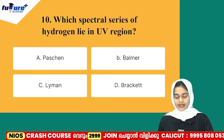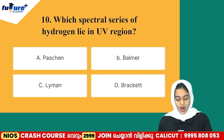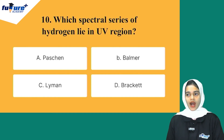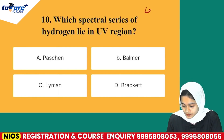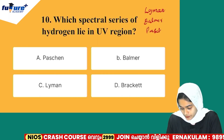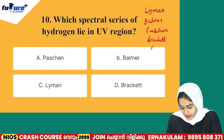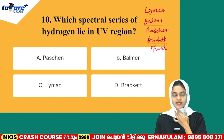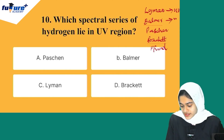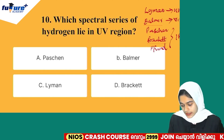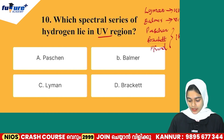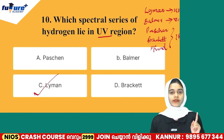Last question: which spectral series of hydrogen lies in the UV region? Option A: Paschen, Option B: Balmer, Option C: Lyman, Option D: Brackett. The Lyman series lies in the UV region. The Balmer series lies in the visible light region. The other series — Paschen, Brackett, and Pfund — lie in the infrared region. The correct answer is Option C, Lyman.